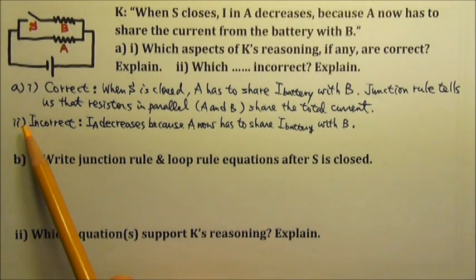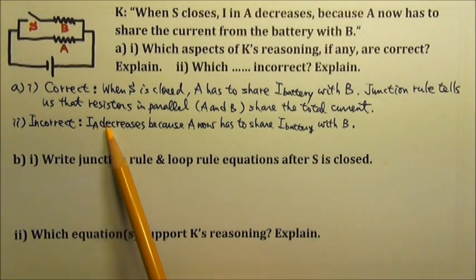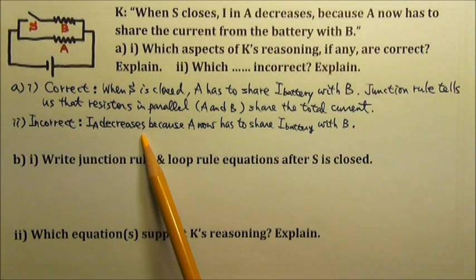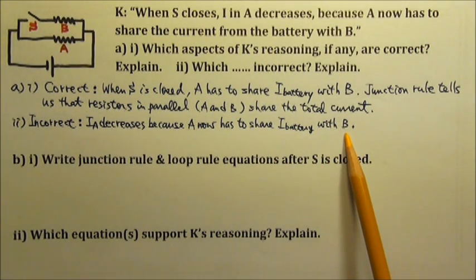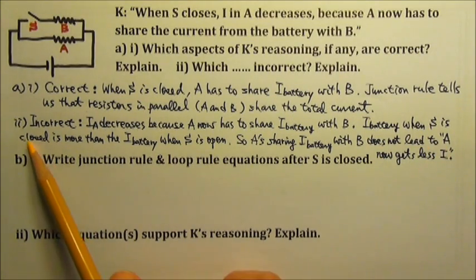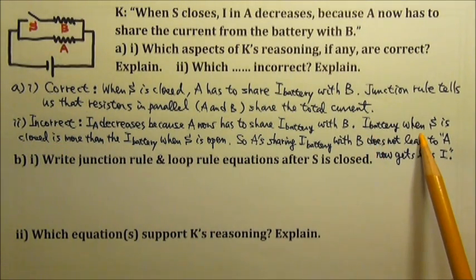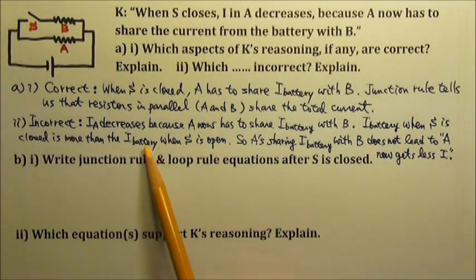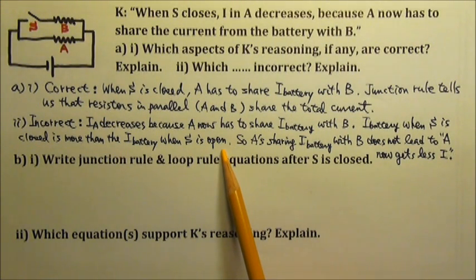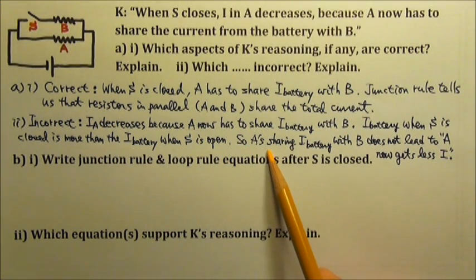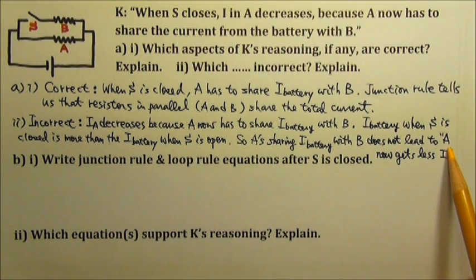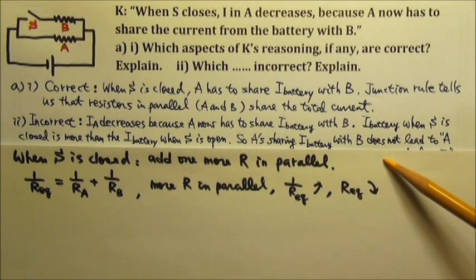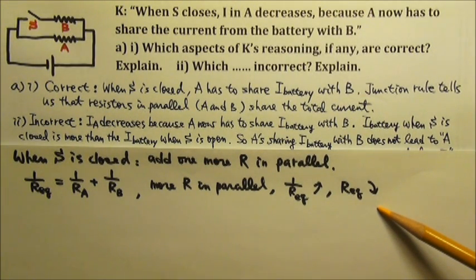Part A2. The incorrect reasoning is that the current in A decreases because A now has to share the battery's current with B. After the switch is closed, the battery's current is more than it was when the switch was open. So A sharing the battery's current with B does not lead to A getting less current. You do not have to include this part in your explanation.